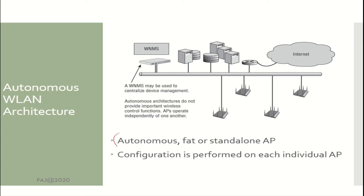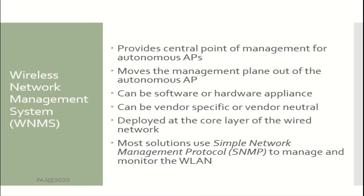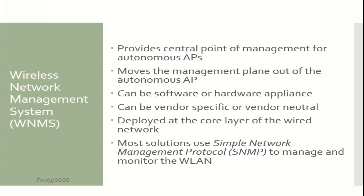Autonomous wireless LAN architecture uses autonomous, fat, or standalone APs where the configuration is performed on each individual AP. A WNMS (Wireless Network Management System) may be used to centralize device management. It provides a central point of management for autonomous APs, moving the management plane out of the AP. It can be software or hardware appliance, vendor-specific or vendor-neutral, deployed at the core layer of the wired network. Most solutions use SNMP to manage and monitor the wireless LAN.